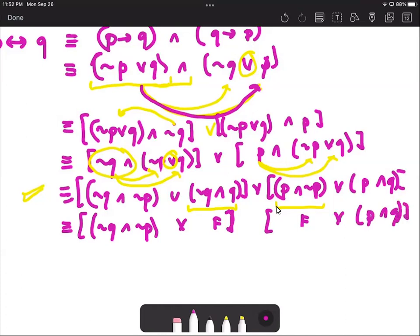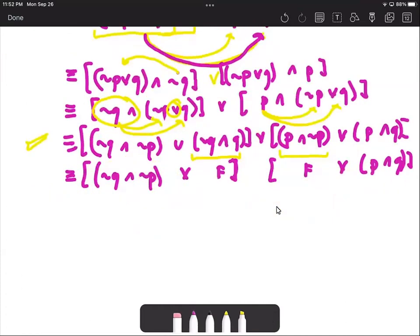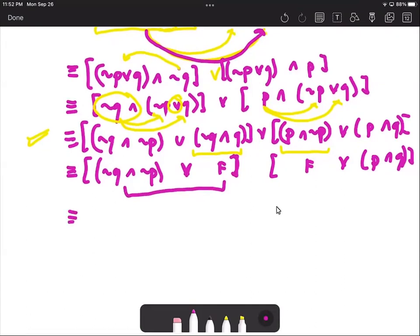And we will group that with not q and not p or false or false or p and q. Now what we can do next is further simplify our results. Any statement taken with an or false will evaluate to itself. So this will evaluate to not q and not p using the identity law, or p and q.